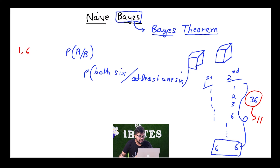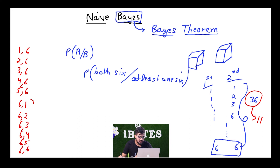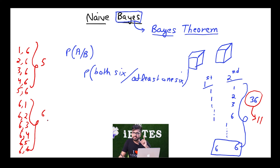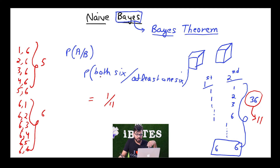Let me list down these outcomes. We have: 1-6, 2-6, 3-6, 4-6, 5-6, and then 6-1, 6-2, 6-3, 6-4, 6-5, and 6-6. That's 6 outcomes on one side and 5 on the other — a total of 11 outcomes in which at least one of them is a 6. From these 11 outcomes, there is only one outcome where both are 6. So the conditional probability — P(both 6 | at least one 6) — is 1/11.